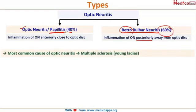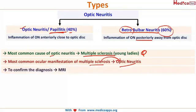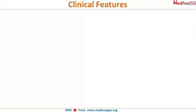The most common cause of optic neuritis is multiple sclerosis. This is an important exam point — in a young lady presenting with optic neuritis, you must immediately suspect multiple sclerosis. Conversely, the most common ocular manifestation of multiple sclerosis is optic neuritis. The immediate investigation to rule out multiple sclerosis is an MRI.